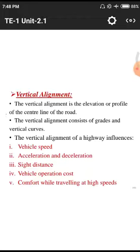The fourth factor is vehicle operation cost. In vertical alignment we are moving against gravity, so the vehicle requires more fuel compared to normal routes. Traveling one kilometer on those particular roads will cost more than the same distance on a normal road, because of gravitational forces and other extra forces acting on the body due to vertical alignment.